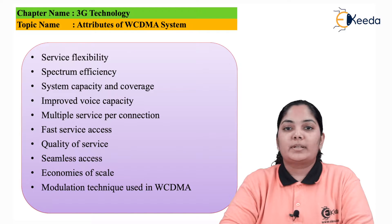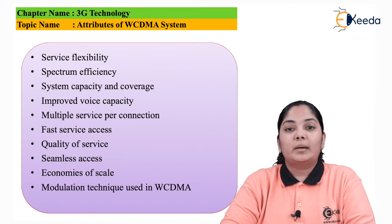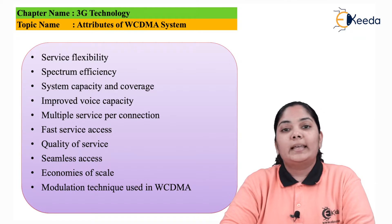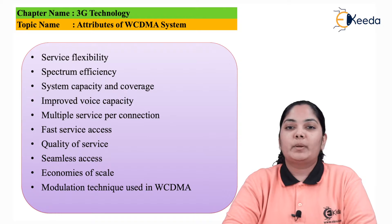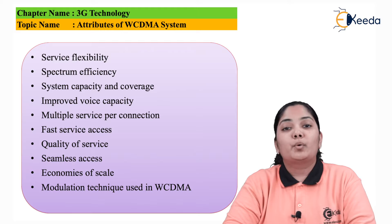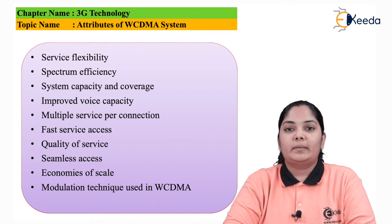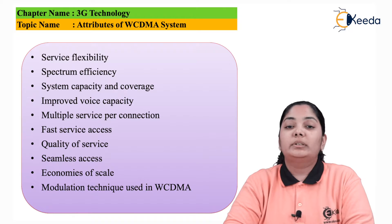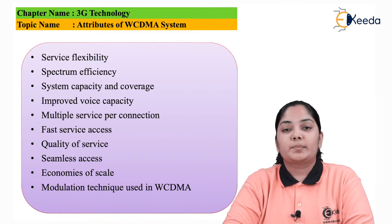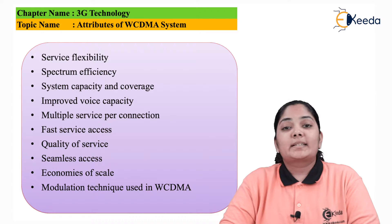The next attribute is System Capacity and Coverage. WCDMA provides up to 8 times the data rates of Narrowband Systems, giving improved capacity over other digital systems. This improved capacity comes from coding gain, sectoring, and the reuse of the spectrum that has been implemented in WCDMA.